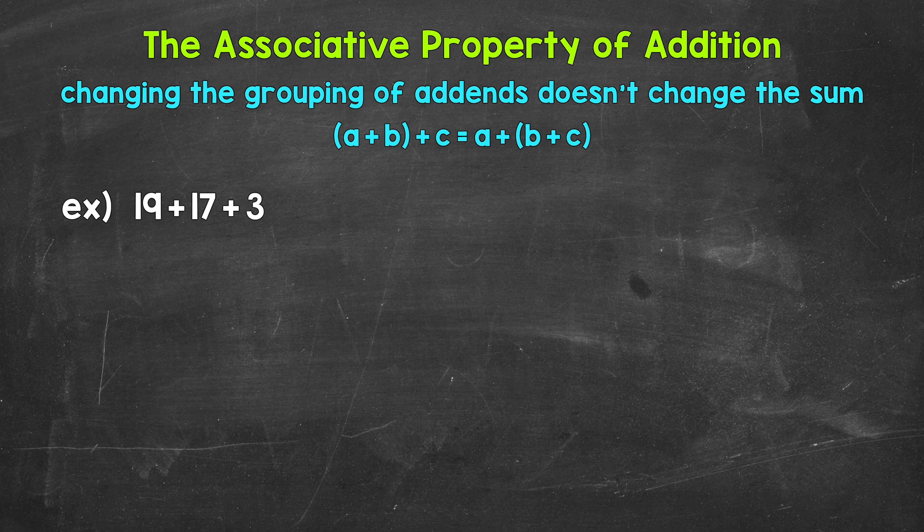Now, don't let those letters confuse you. They are there to represent numbers and show that this will work for any numbers. Let's jump into our example and see exactly what this means. We have 19+17+3.